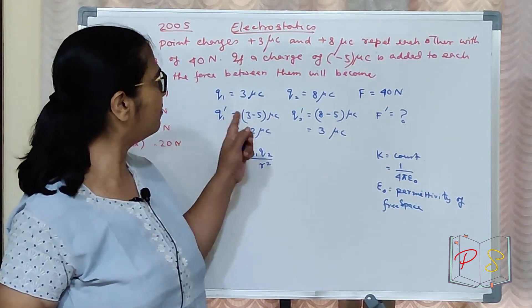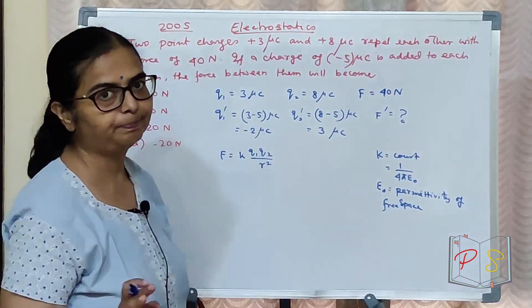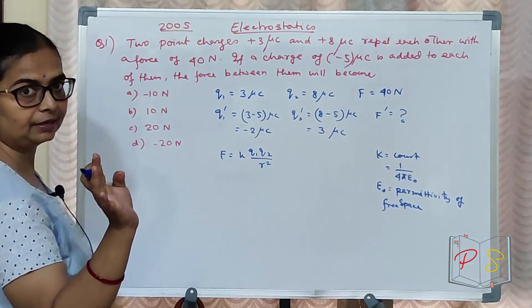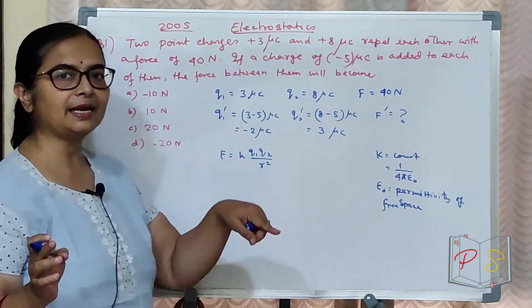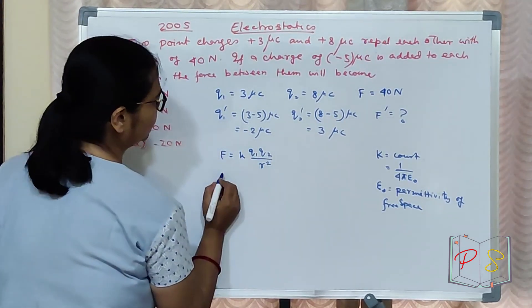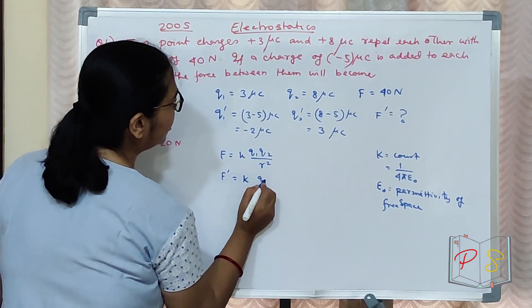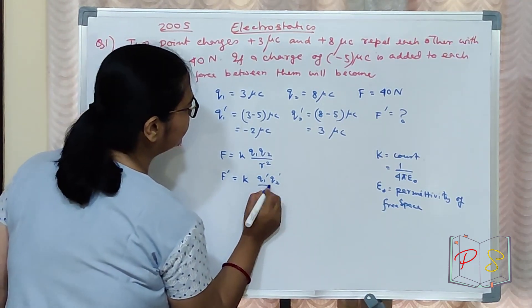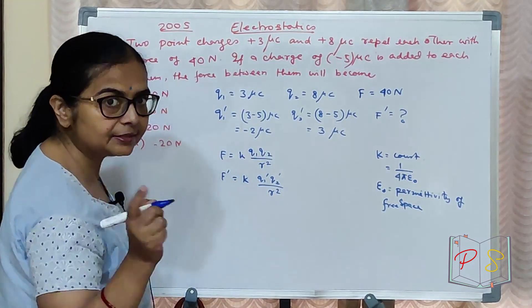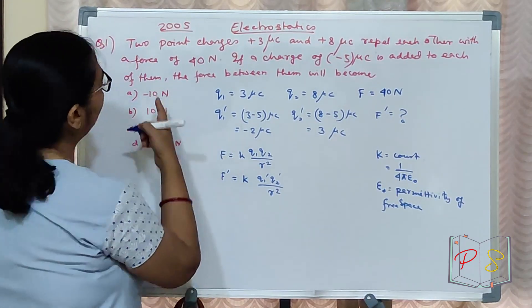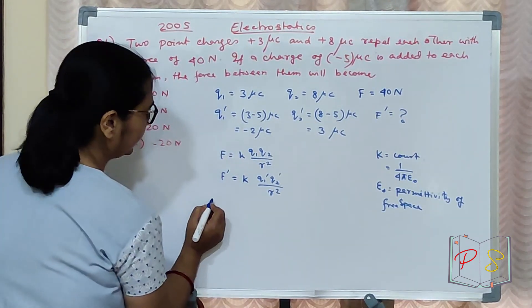K is a constant. In the first case and second case, constant will remain. Only charge will change. Your F dash will be K Q1 dash Q2 dash divided by R square. R is also the same. So what is F dash?